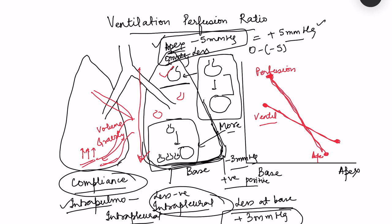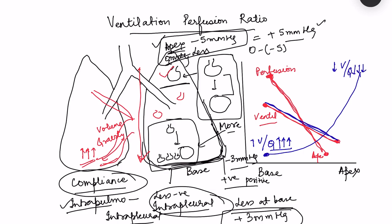If ventilation and perfusion fell at the same rate, the VQ ratio would be 1 everywhere. But because perfusion falls much more steeply, the VQ ratio varies across the lung. At the base, ventilation is more but perfusion is much greater, so VQ is less. At the apex, ventilation is less but perfusion is far less, so VQ is approximately 3.